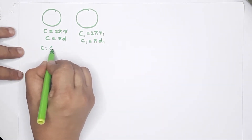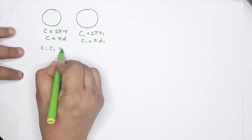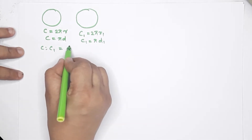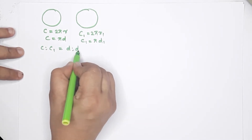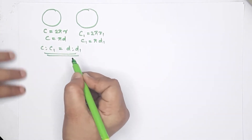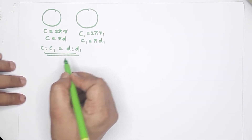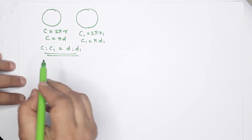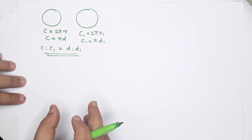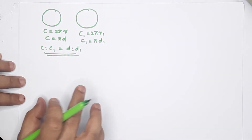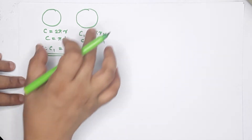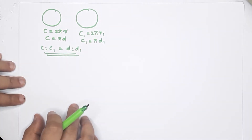What can we say about C to C₁? We can say D is to D₁. That is, the perimeters of the circles are scaled by the same factor as their diameters.